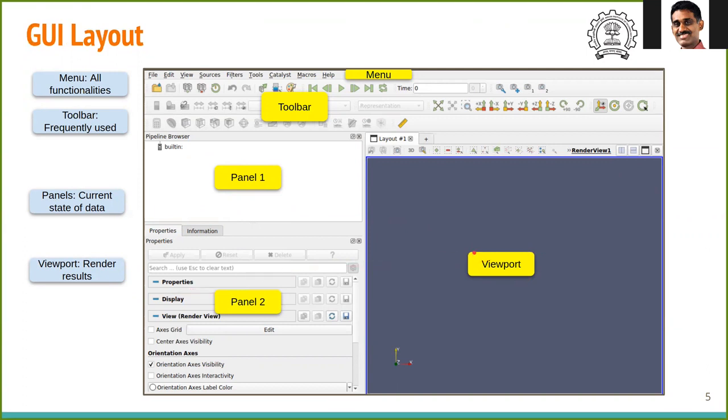In terms of the workflow we mentioned earlier, the panels contain information about the source and its manipulation. The final rendering is done in the viewport.